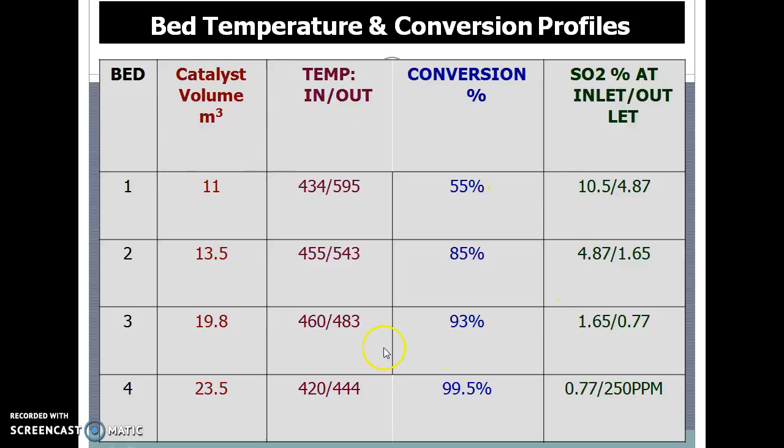In the catalyst, the maximum conversion is in first, second, and third bed, whereas very small amount of conversion in fourth bed. Because amount of SO2 is more initially, so conversion is more. As you go ahead, reactant concentration is less, so rate of reaction is less and you have less conversion in fourth bed.